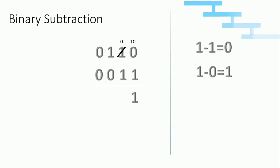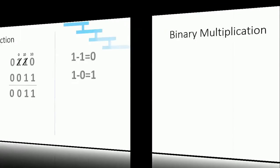One zero minus one is one, because two minus one is one. Now we can't subtract one from zero, so we get one from the nearest bit. We get one, which is one zero. One zero minus one is one. Zero zero zero: when we subtract zero one one zero with zero zero one one, we got the output zero zero one one, that is six minus three gives us three.